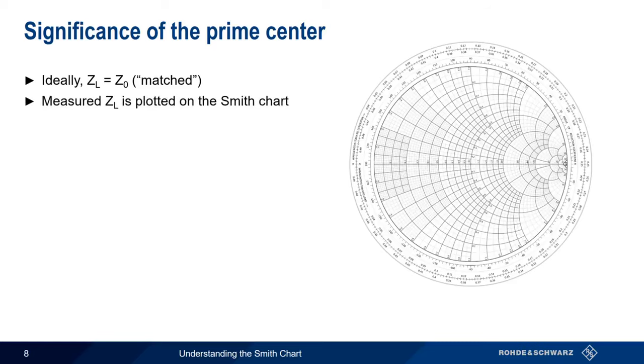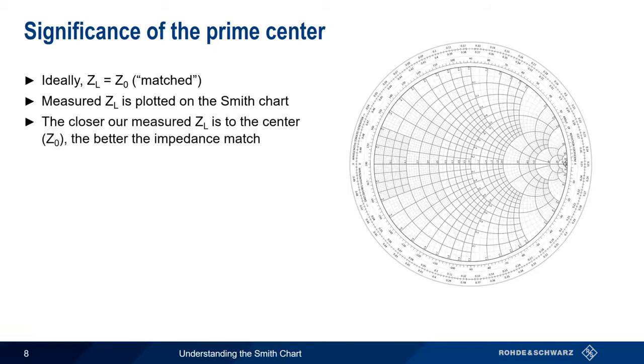Measured values of Z sub L are plotted on the Smith Chart, where our normalized source impedance, Z sub zero, is always in the center. So the closer our measured and plotted Z sub L values are to the center, the better our impedance match.